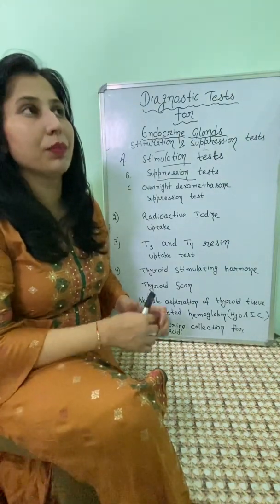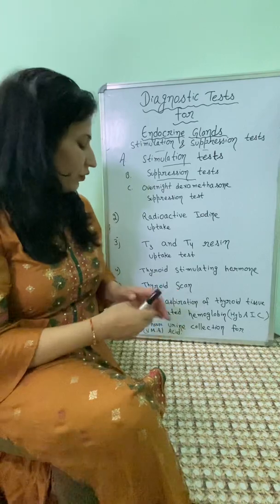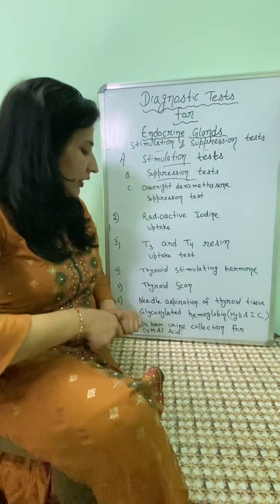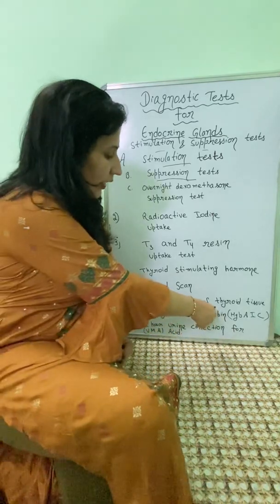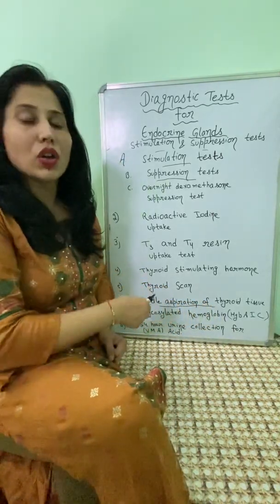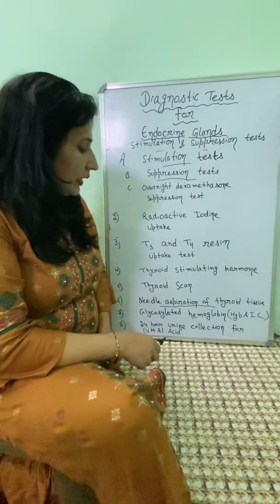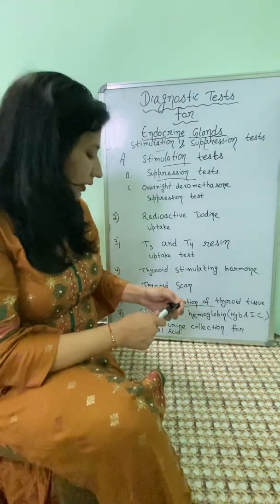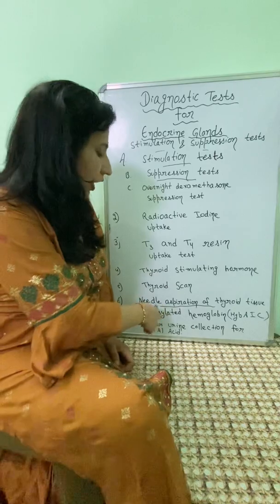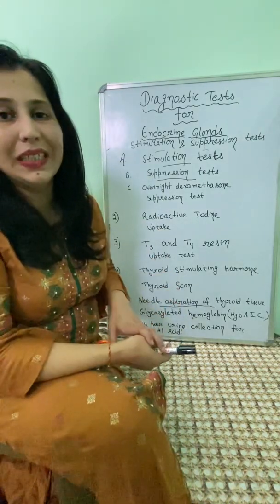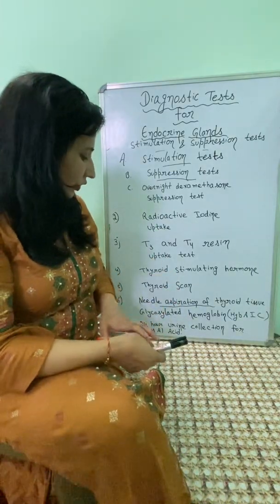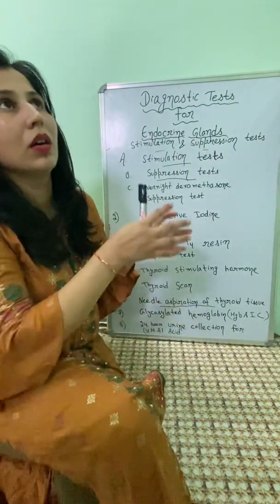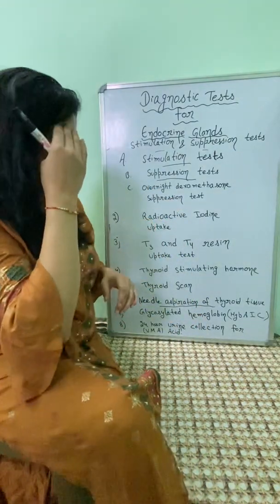Next is fine needle aspiration of thyroid tissue, where thyroid tissue is aspirated for cytological study. A common NCLEX question is: after aspiration of the thyroid, why do we apply pressure? The answer is to prevent bleeding.